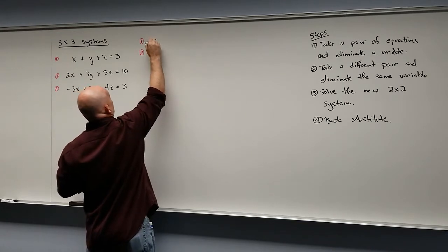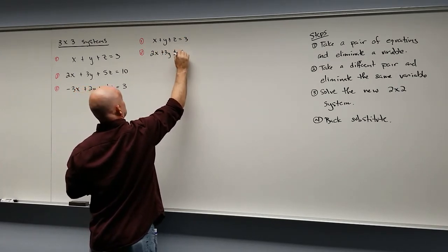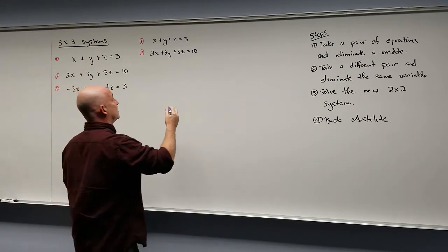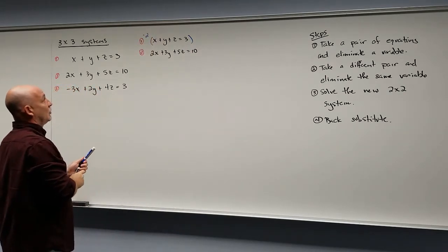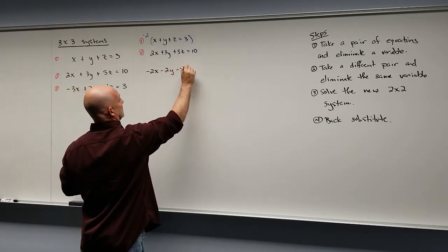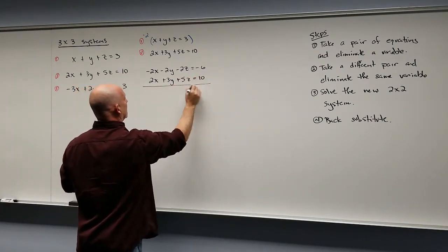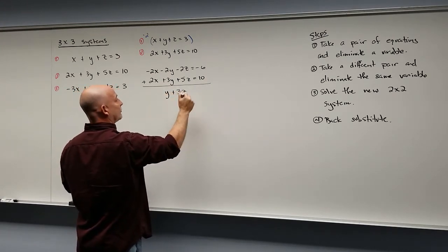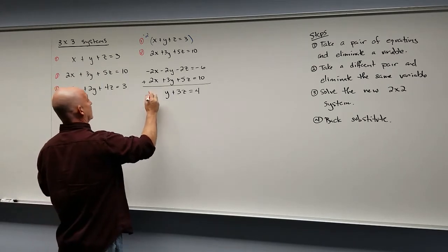So I have x plus y plus z equals 3, and 2x plus 3y plus 5z equals 10. To get rid of the x's using the elimination method, I want the same number in front of the x's but a different sign. I'll take the first equation and multiply by negative 2, giving negative 2x minus 2y minus 2z equals negative 6. Adding these together, the x's go away, and I get y plus 3z equals 4. Let's call that equation 4.